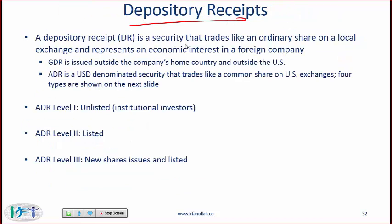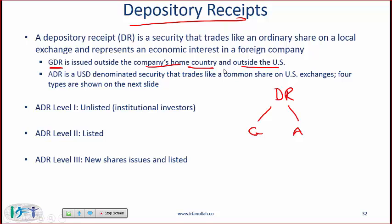A depository receipt is a security that trades like an ordinary share on a local exchange and represents an economic interest in a foreign company. For example, an Indian company whose shares trade on the London Stock Exchange would be an example of a depository receipt. Within depository receipts you can have GDRs and ADRs. A GDR is issued outside the company's home country and outside the United States. An ADR is a US dollar-denominated security that trades like a common share on US exchanges — for example, Nokia's ADRs trade on the New York Stock Exchange.